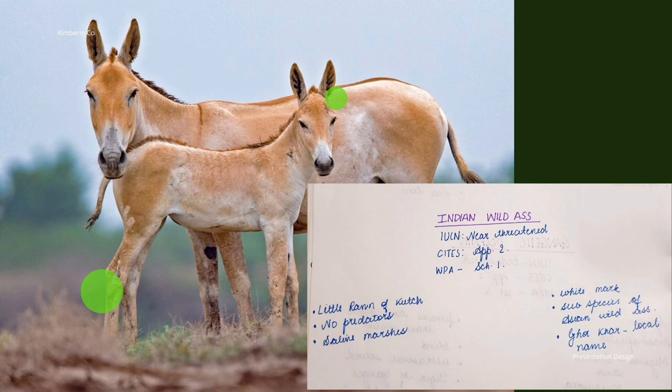Next is the Indian wild ass. They are very special because the Little Rann of Kutch is their habitat — they live in saline marshes. Their IUCN status is Near Threatened, listed under CITES Appendix 2, meaning trade should be regulated to prevent them from becoming vulnerable. Under the Wildlife Protection Act, they are in Schedule 1.